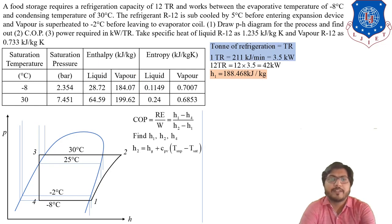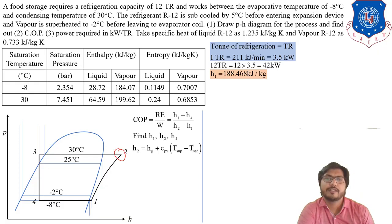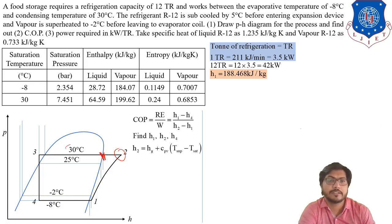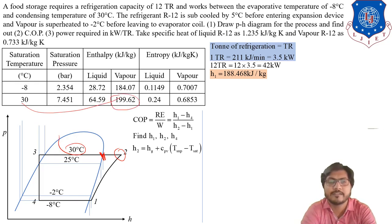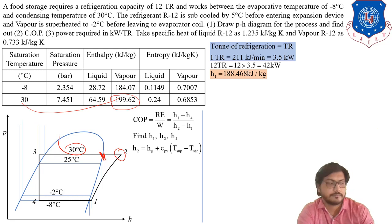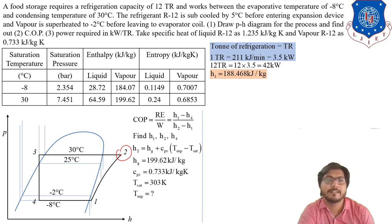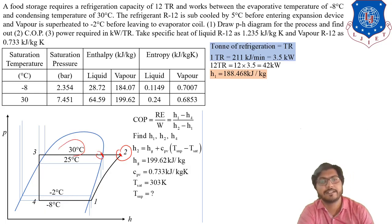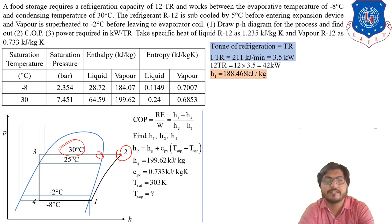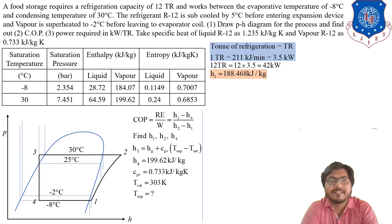Now calculate h2. Point 2 is also in the superheated phase: h2 = Hg + Cpv × (T_superheated_2 - T_saturated). Hg at 30 degrees is 199.6 kJ/kg and T_saturated at 30°C is 303 K. However, the superheated temperature at point 2 is unknown. Since process 1 to 2 is isentropic, we use the condition s1 = s2 to find T_superheated at point 2.